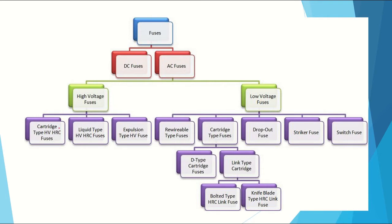High voltage fuses are further divided into cartridge type HV HRC fuse, liquid type HV HRC fuse, and expulsion type HV HRC fuse. Low voltage fuses are classified into re-wireable type, cartridge type, dropout, striker, and switch fuses. Cartridge type low voltage fuses are again divided into D-type cartridge fuses and link type fuses, with link type further split into bolted type and knife blade type.